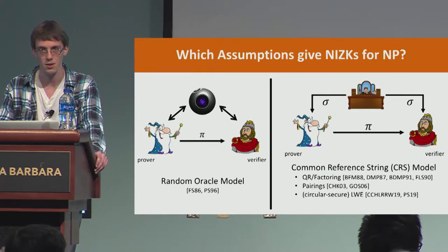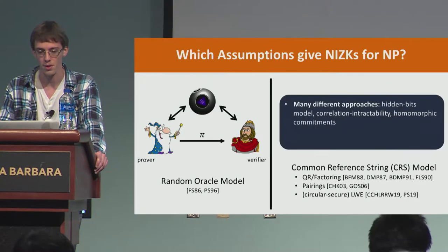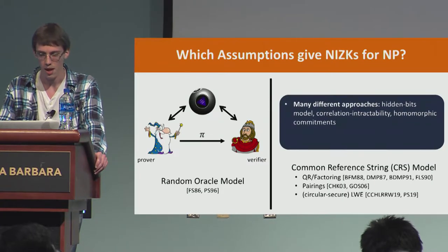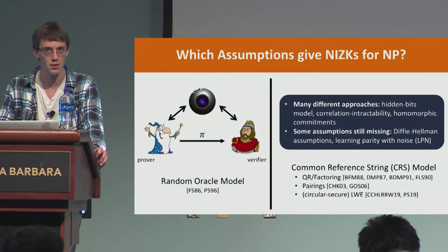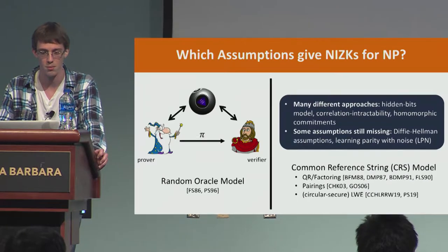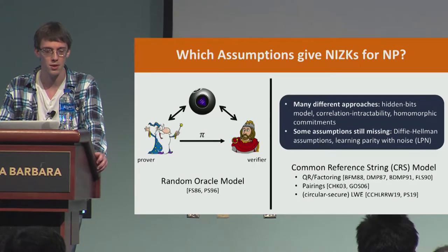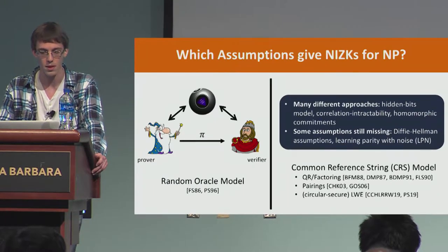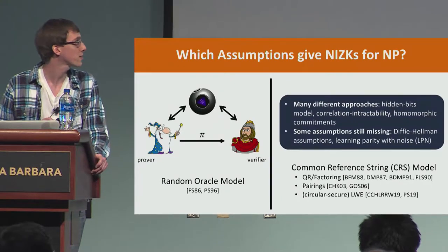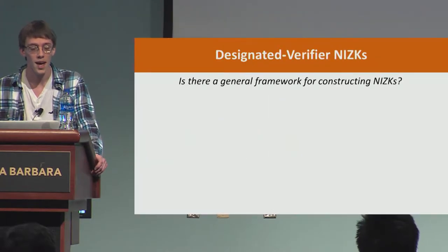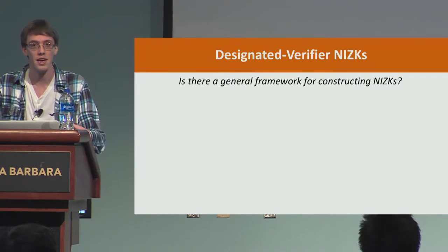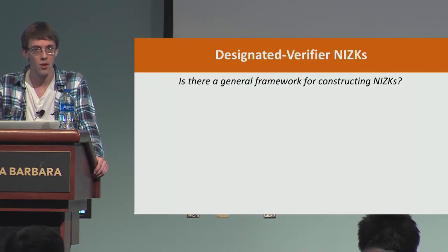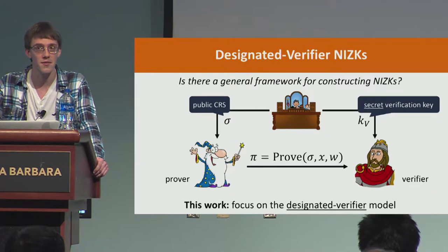So this is the state of the art on NIZK. The constructions are all fairly ad hoc and different from each other, and there are notable computational assumptions we don't know how to use — the clearest examples being Diffie-Hellman style assumptions and the learning parity with noise assumption. In contrast, what we ask in this work is: is there a general framework for constructing NIZKs? The setting we consider is that of a designated verifier NIZK.